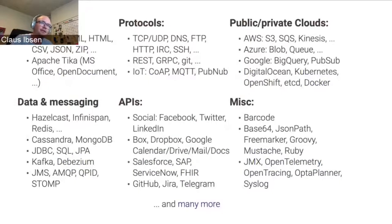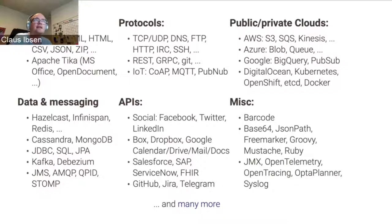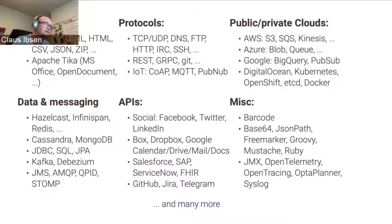There are so many components that we can't fit them on a single slide. But you can go to the Camel website where you can see all the components for different categories: classic files and protocols, messaging, legacy systems, Kafka, and cloud systems including Azure, Google, and Amazon.